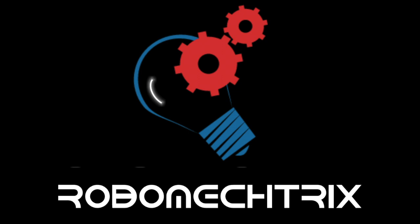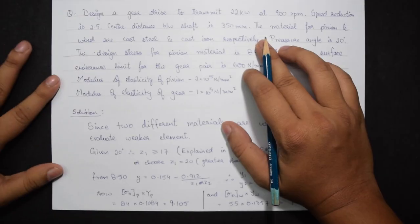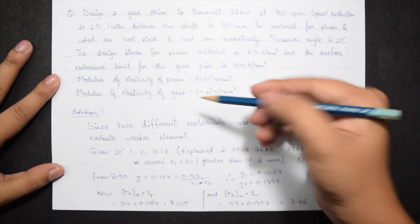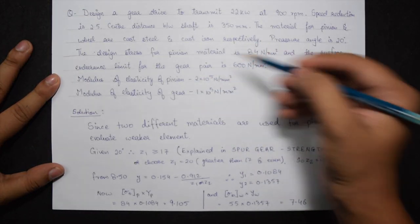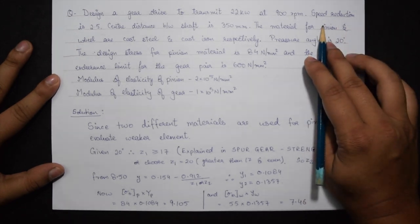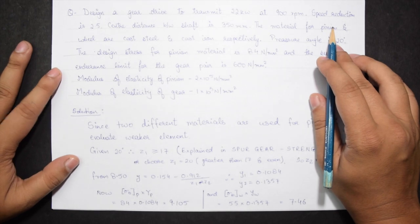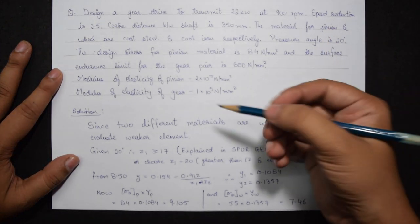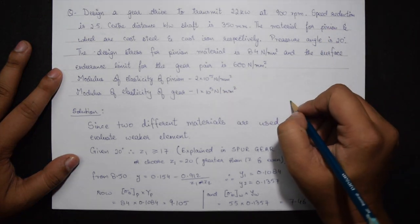Hello guys, RoboMetrix presents to you part 2 of spur gear design procedure based on the wear condition. Here our question will have pinion and wheel of both different materials. As you saw in the previous video, the design procedure was explained step by step. Here I will be telling you the main points of consideration when both the materials are different.